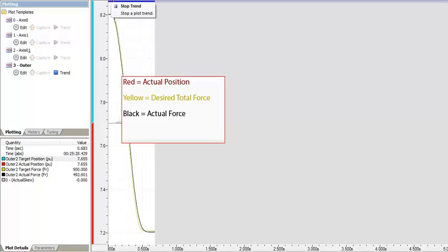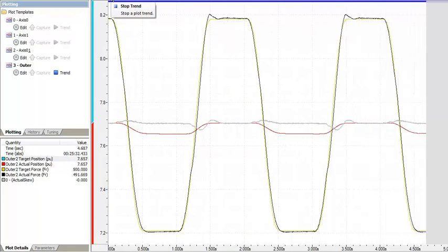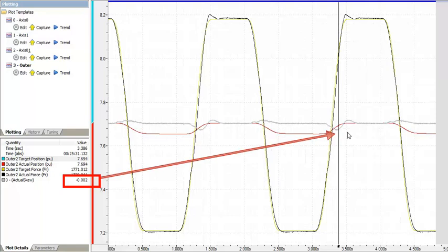Looking at another plot of the force ramping, we see that the skew between the cylinders, shown by the gray line, is .002 inches at the cursor.